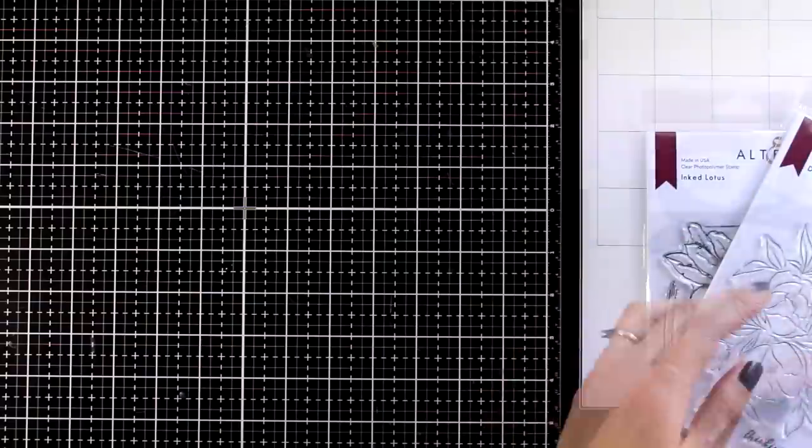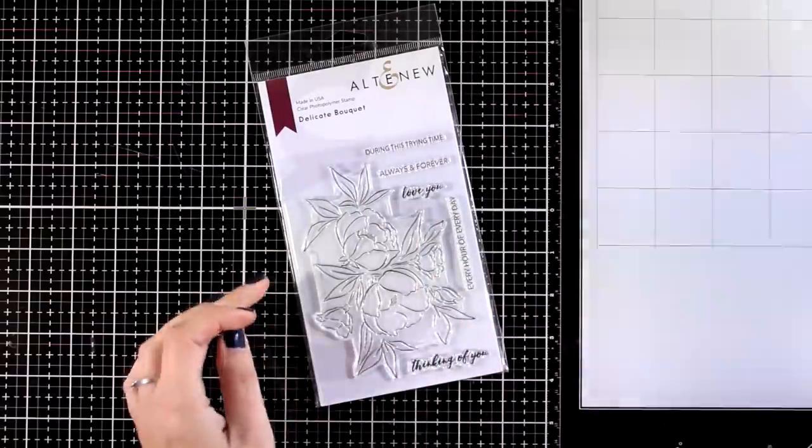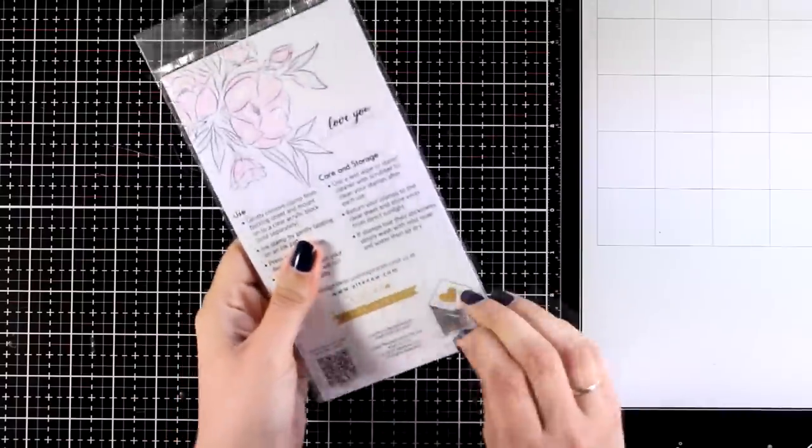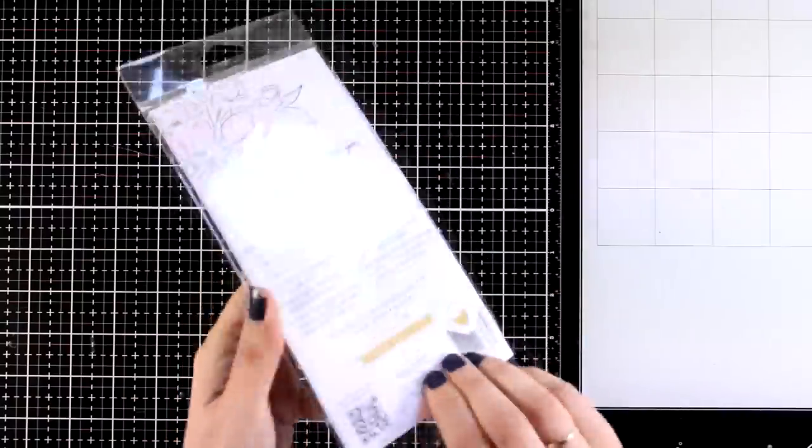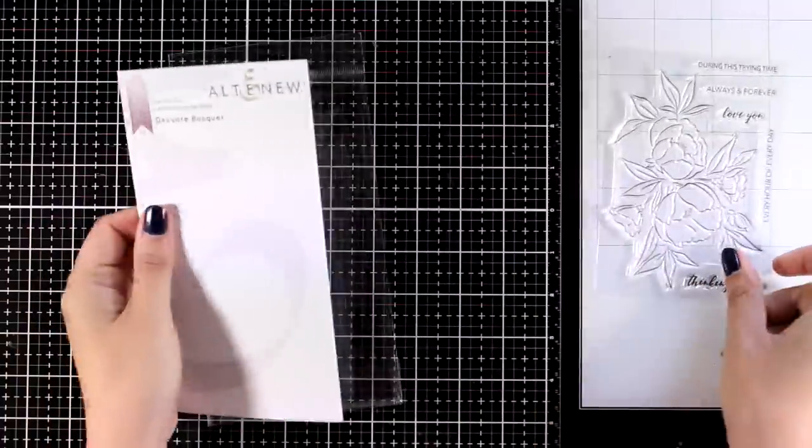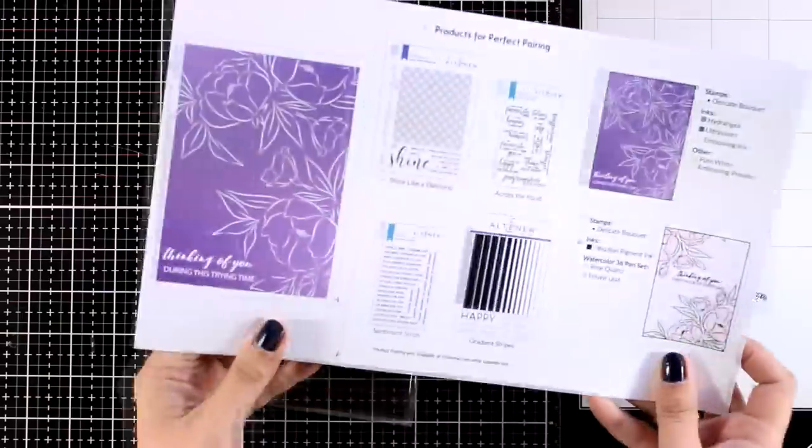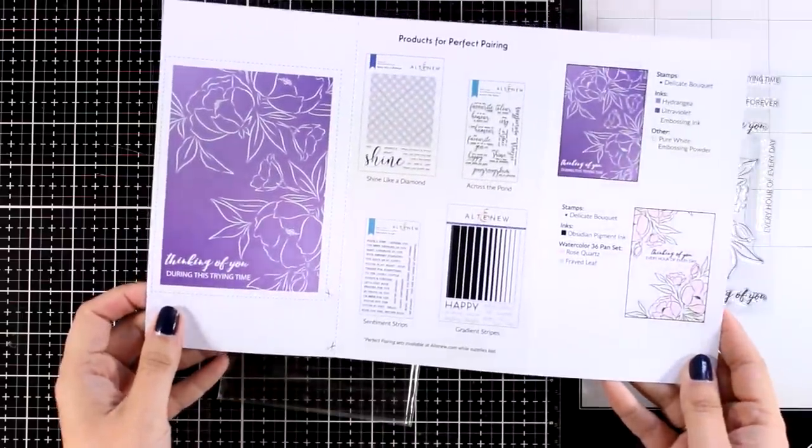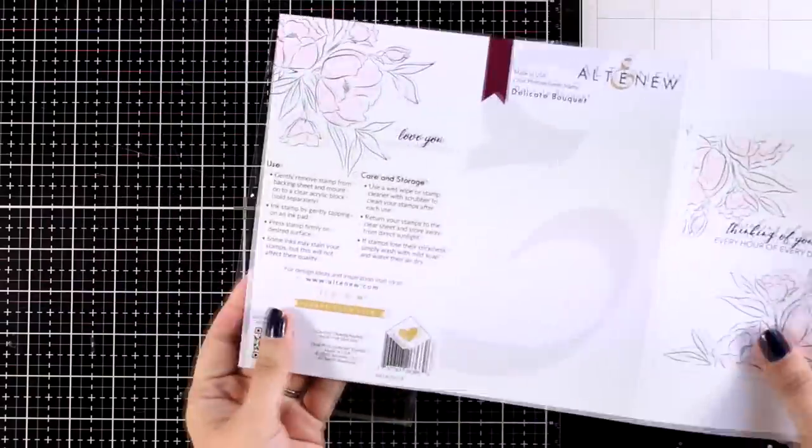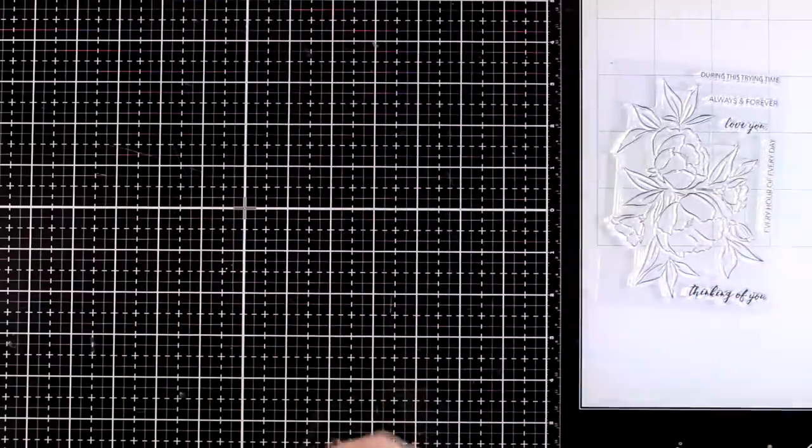For today I'll be working with probably my favorite from this release. This is called Delicate Bouquet and this stamp set is absolutely beautiful. It gives you this lovely flower bouquet that you can color with your favorite mediums. There are also matching dies available that I don't have, but you'll see how I'll be able to add some dimension without having to cut all around this flower bouquet.